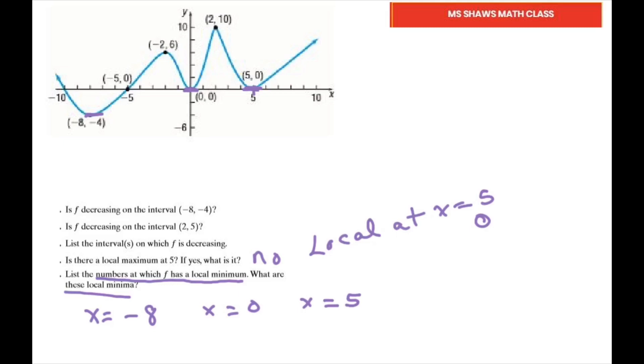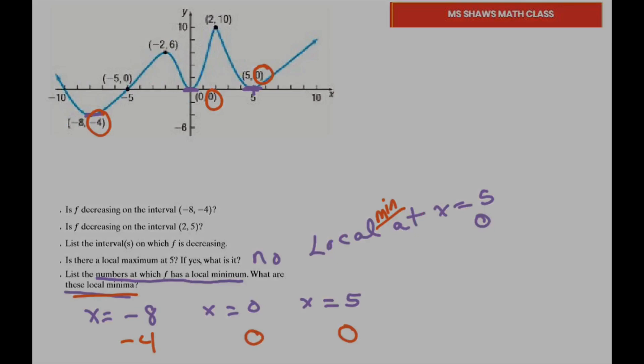What are these local minimum values? That's your y-values: -4, 0, and 0. So we write -4, 0, and 0. Okay. That's it. Thank you. Have a nice day. Bye-bye.